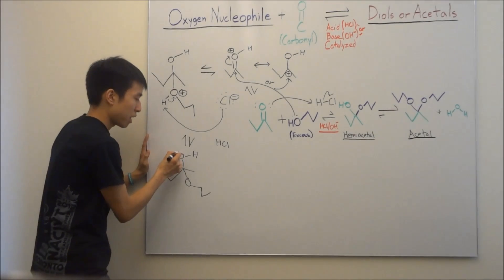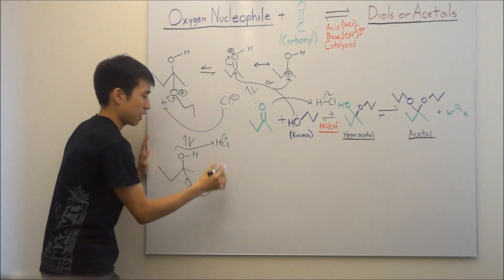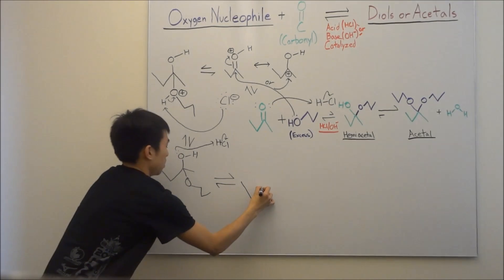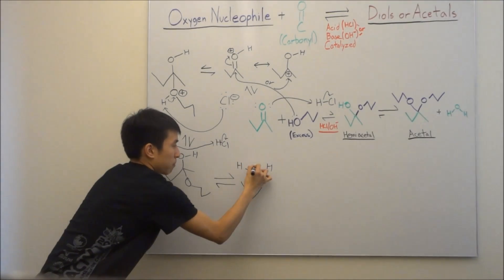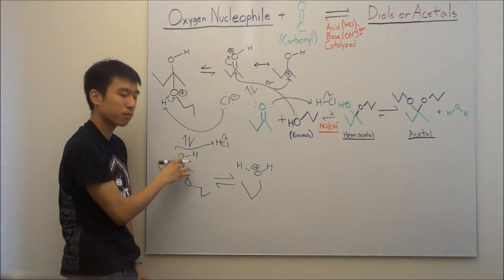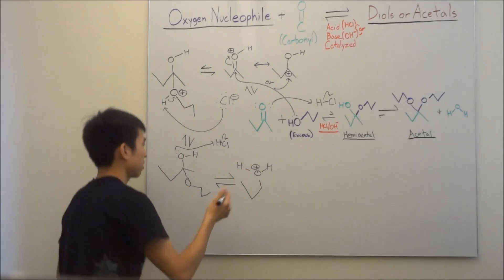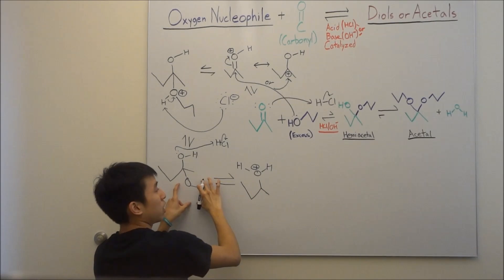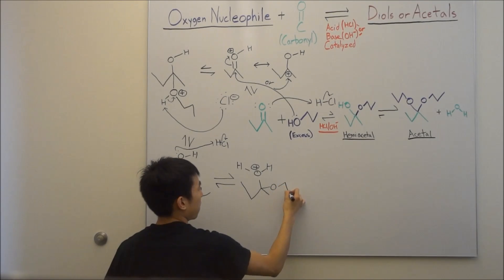When you attack the acid, what you're going to get is this molecule over here with a positive charge now. Because oxygen had two bonds before, now he has three bonds. So he's positive, and also he lost the electrons when he made the bond. I'm just going to move your ether up here just to make it easier to see our product.